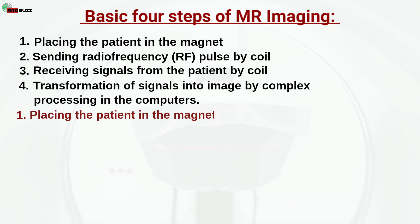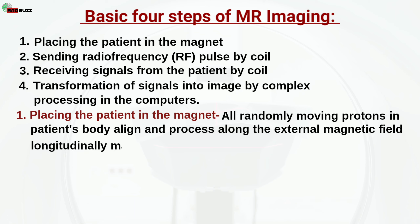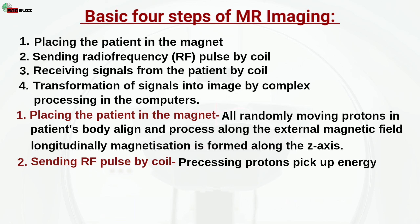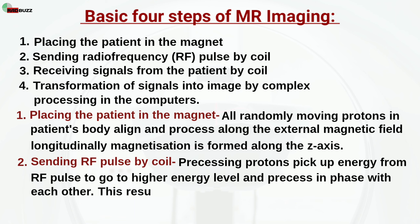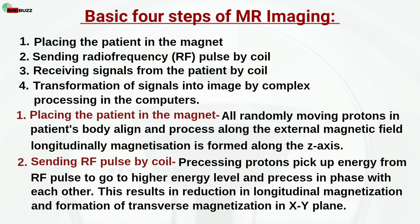Step 1 — Placing the patient in the magnet: All randomly moving protons in the patient's body align and precess along the external magnetic field. Longitudinal magnetization is formed along the z-axis. Step 2 — Sending RF pulse by coil: Precessing protons pick up energy from the RF pulse to go to a higher energy level and precess in phase with each other. This results in reduction of longitudinal magnetization and formation of transverse magnetization in the XY plane.